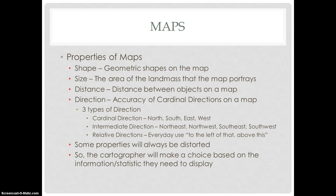Some properties will always be distorted, so the cartographer must make a choice based on the information or statistics they need to display, deciding which feature they deem is not as important as another.